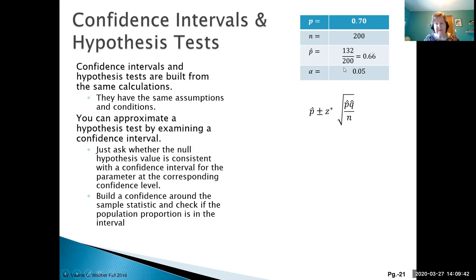Going back to our confidence interval calculations: point estimate plus or minus the z-critical times the square root of p-hat q-hat over n. Notice this is slightly different from the hypothesis test because here we're dealing with p-hat as an estimate of the population value.